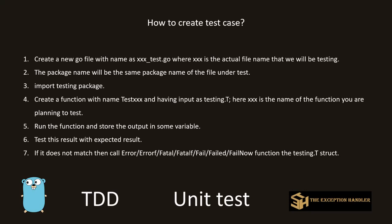The first step involves creating a test.go file. This file has to have a name before 'test' as well — that prefix represents the file you are actually testing. This test.go file has to be in the same directory as your actual file which has the implementation. The package name on the first line of this test.go file must be the same package name as the file you are testing.